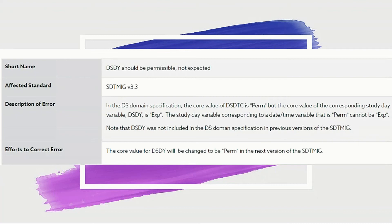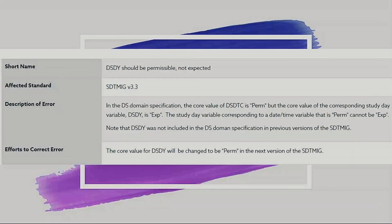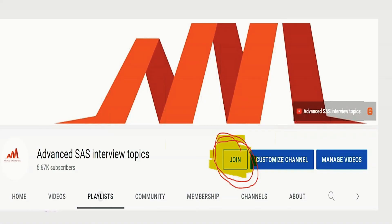Note that DSDY was not included in the DS domain specification in the previous version of SGTM IG. If you look at the SGTM IG 3.2 version, it is fine. But in 3.3, they are marking it as expected — however, it is a permissible variable only. So the recommended response is that the core value is permissible, and this is a bug in version 3.3.